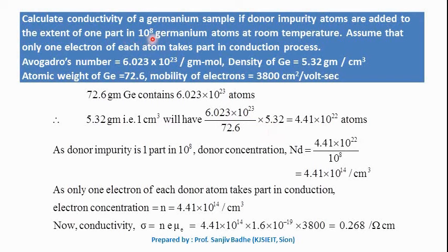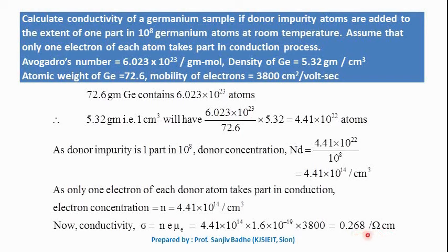It is given that 1 part in 10^8 germanium atoms is the donor concentration. So donor concentration equals 4.41×10^22 divided by 10^8, giving 4.41×10^14 per cm³. One electron per donor atom means electron concentration equals donor concentration, n equals 4.41×10^14 per cm³. Substituting in σ equals n·e·μ_e, conductivity is calculated as 0.268 per ohm-centimeter.